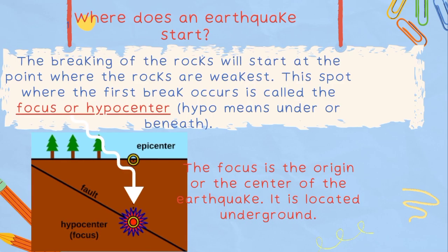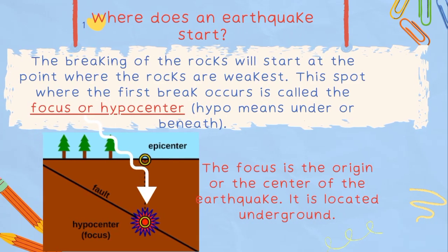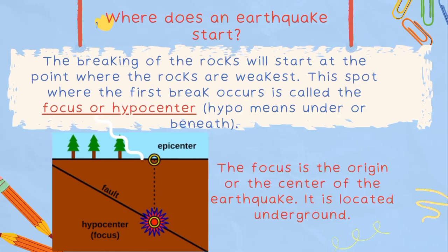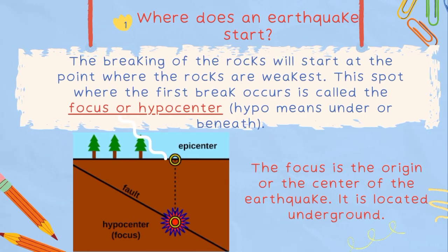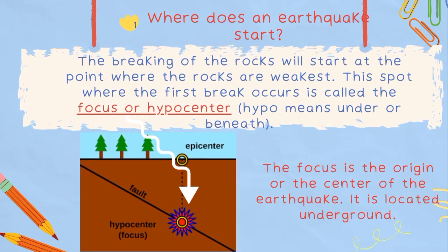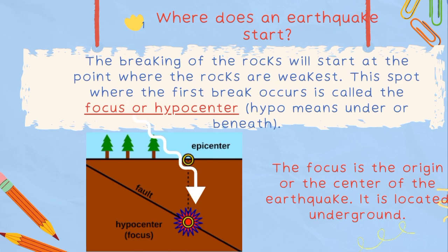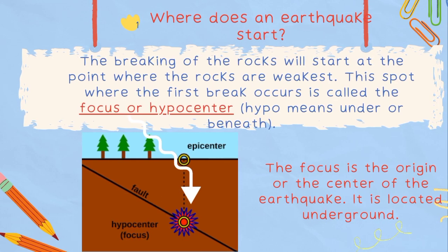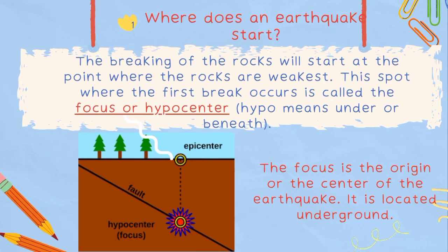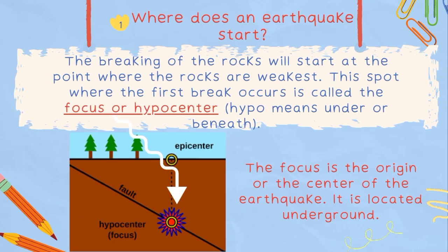Where does an earthquake start? The breaking of the rocks will start at the point where the rocks are weakest. This spot where the first break occurs is called the focus or hypocenter. The focus is the origin or the center of the earthquake, and it is located underground.